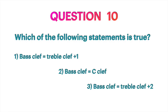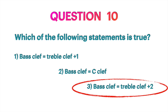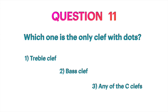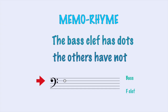Question 10: Which of the following statements is true? Bass clef equals treble clef plus two. This is transposition — it works like maths. Instead of reading the note as it would be in the treble clef, we add two notes above. Question 11: Which one is the only clef with dots? The bass clef. The bass clef has dots, the others have not.